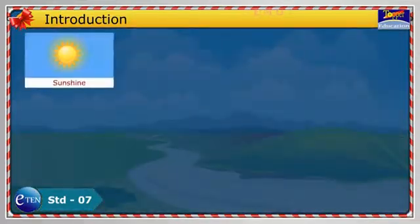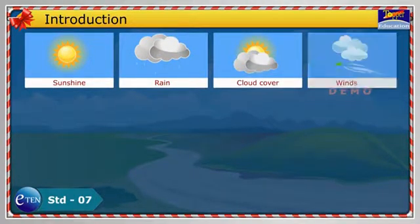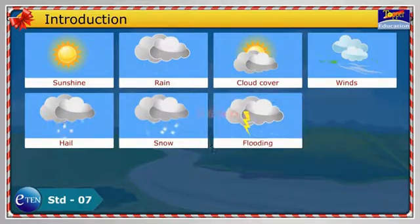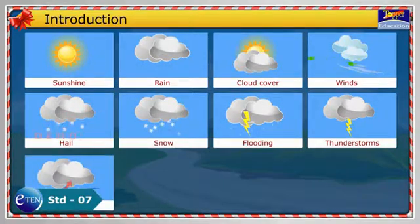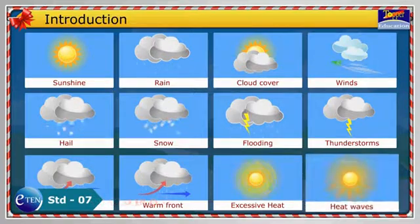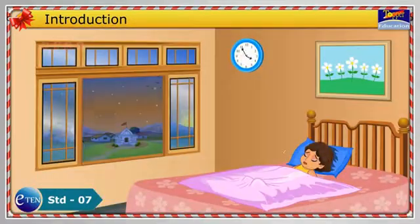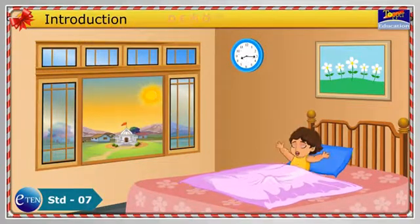Weather includes sunshine, rain, cloud cover, winds, hail, snow, flooding, thunderstorms, steady rains from a cloud front or warm front, excessive heat, heat waves, and more factors that are generally mentioned in a weather forecast. The weather of a place can change within a very short span of time.